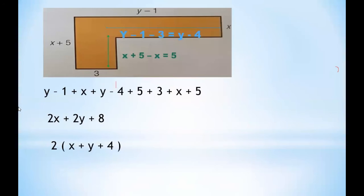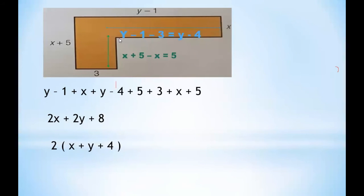Let's do one more example. Look at this L-shape. The full vertical length is y minus 1, and the full horizontal length is x+5. One side is given as 3, one side is x, and two sides are missing. To find the perimeter, we need to determine those missing sides.